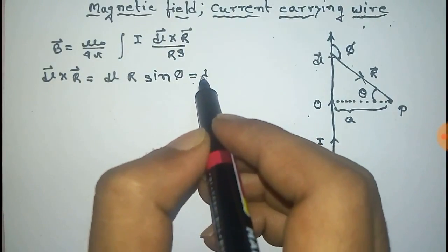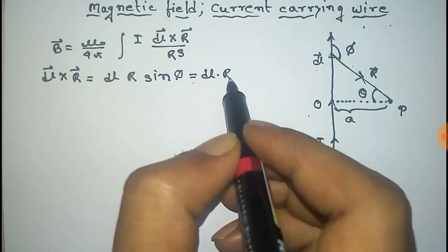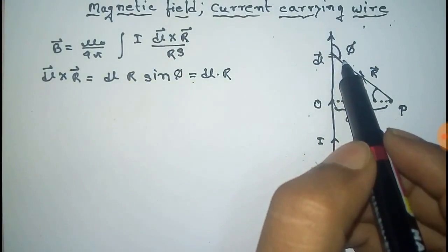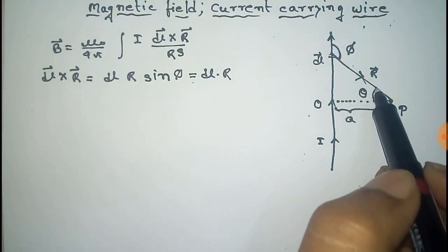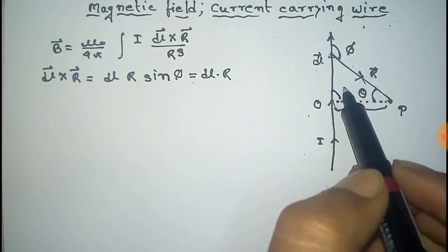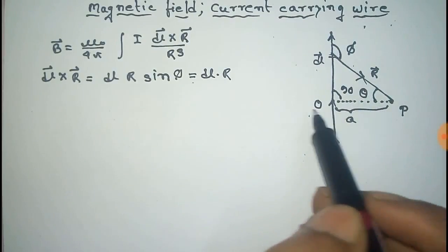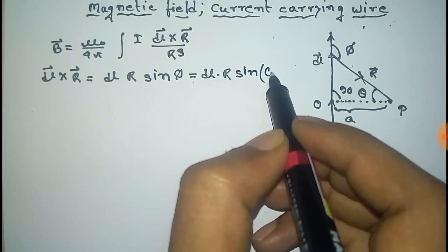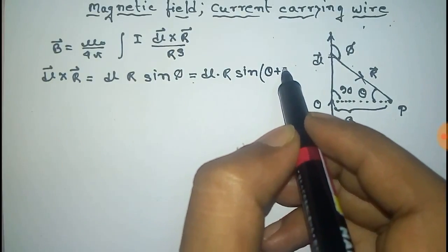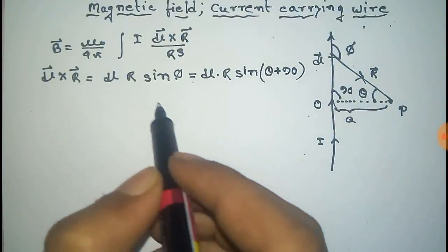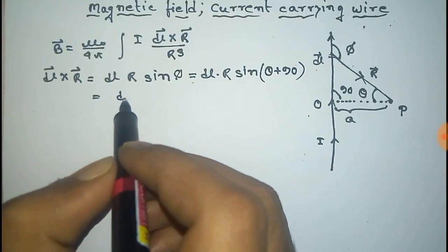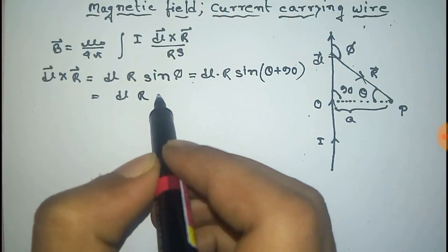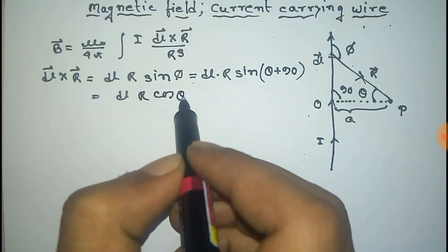That is equal to dL · R. Here, the phi angle equals theta plus 90 degrees. So we can write sin(90 + theta), which equals cos(theta). So the value of dL cross R becomes dL · R · cos(theta).